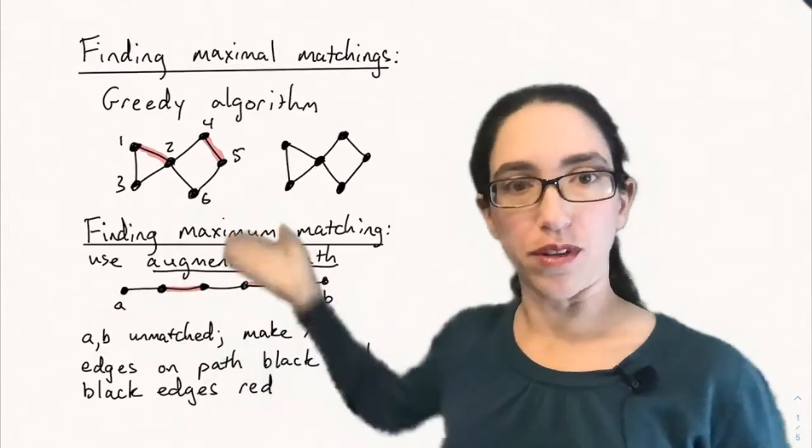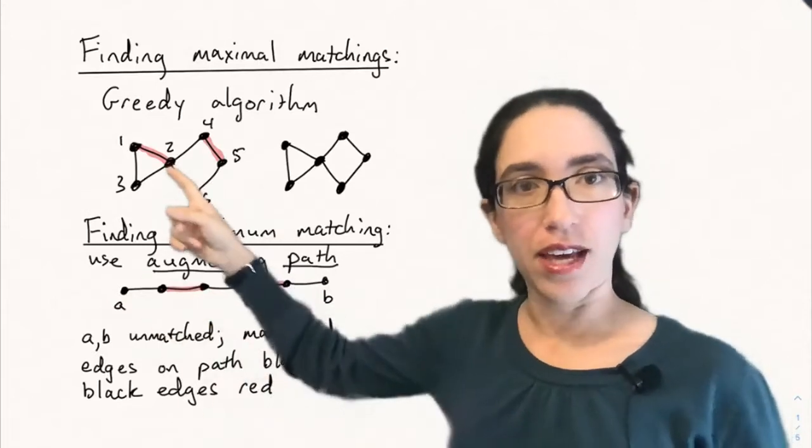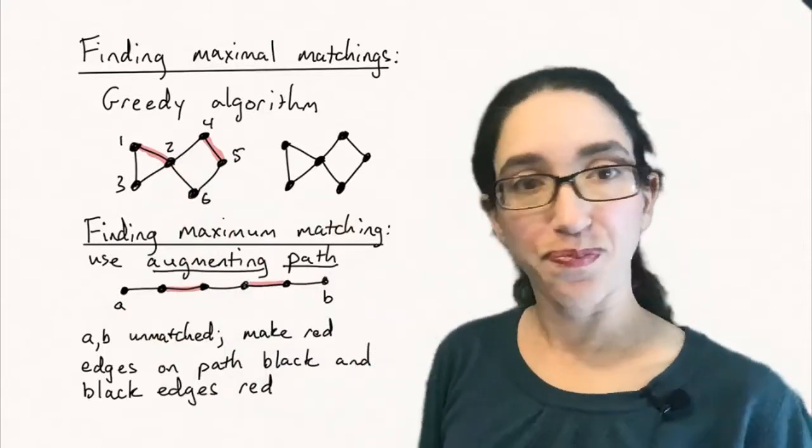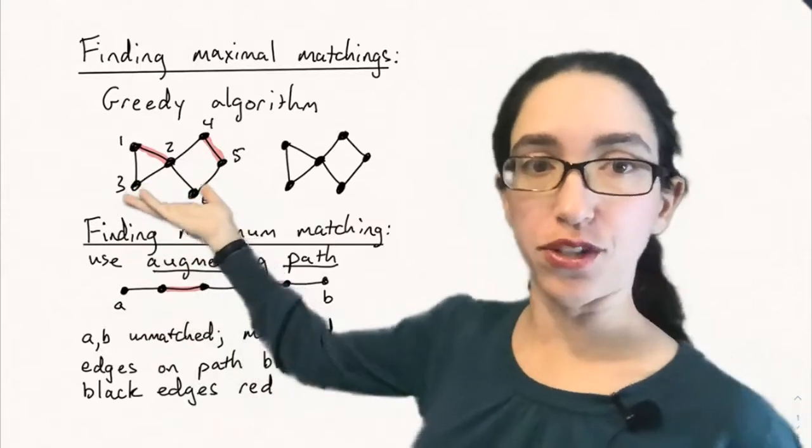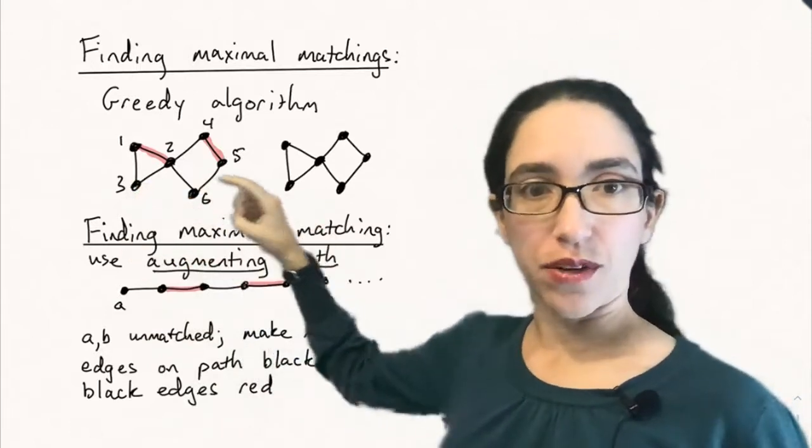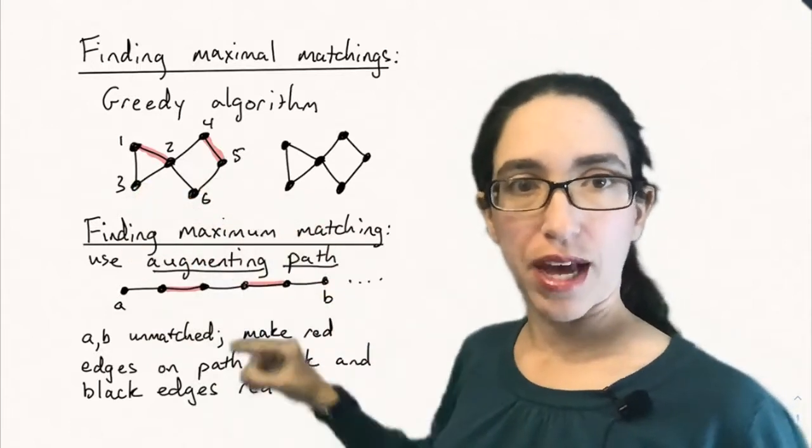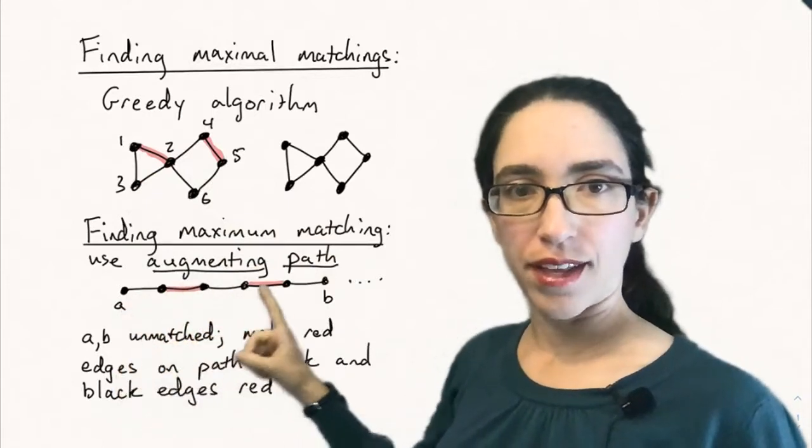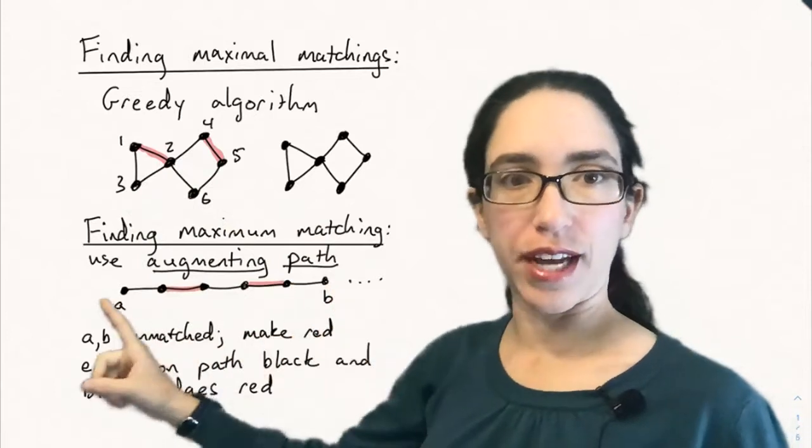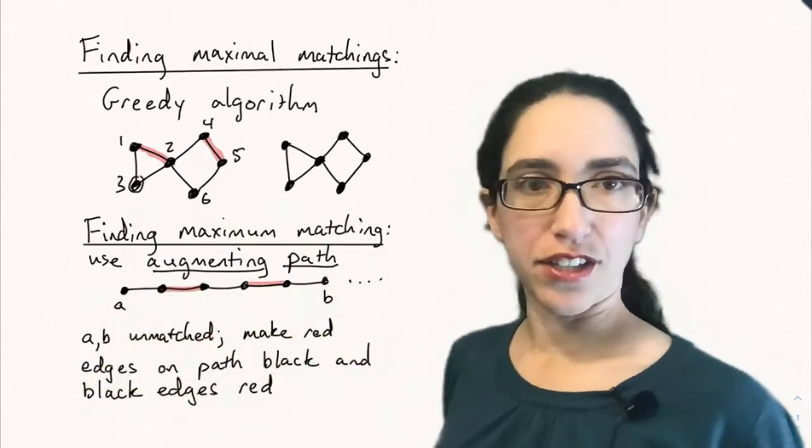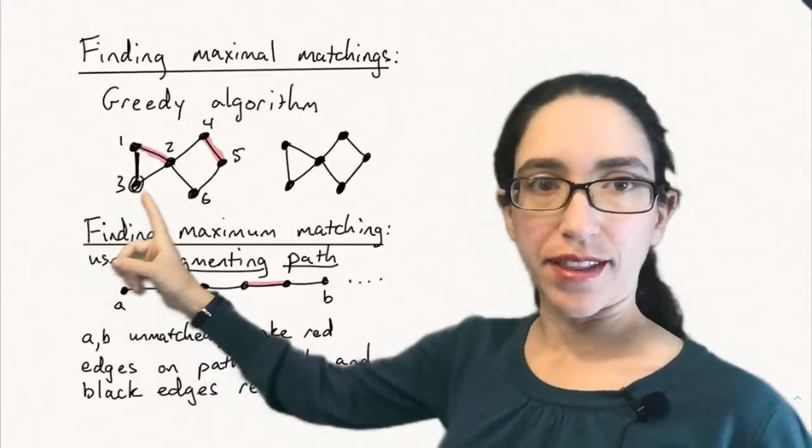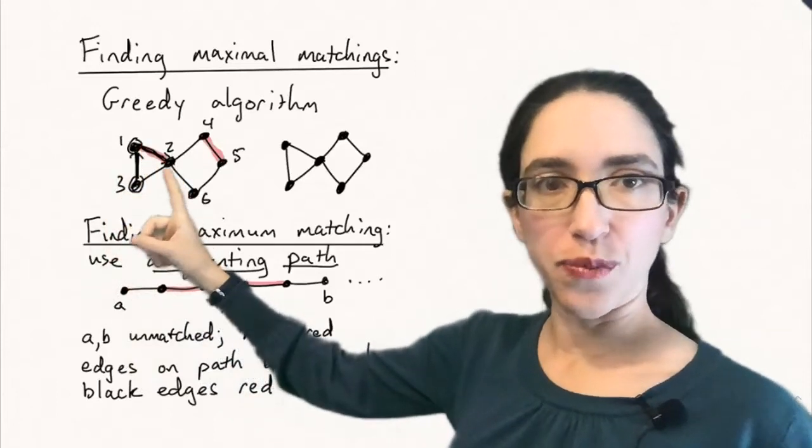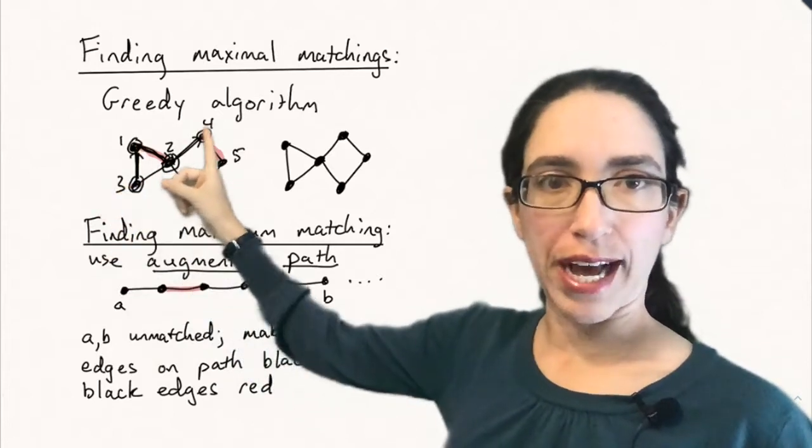Let's do an example of finding an augmenting path in this maximal matching here in order to find a larger matching. Here we have a matching of size two, and we can find an augmenting path by starting with some unmatched vertex and going through a path that ends in an unmatched vertex that alternates black and red edges. So let's start at the three. That's unmatched. We can then go up to the one, which goes to the two. So we're going black, red. Let's do black, red.